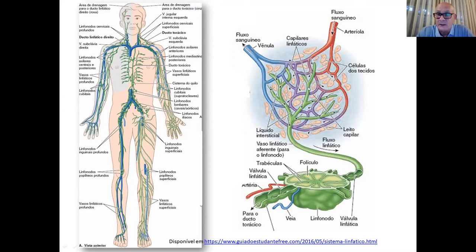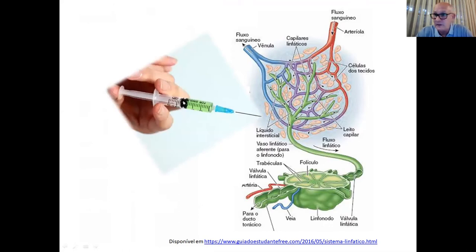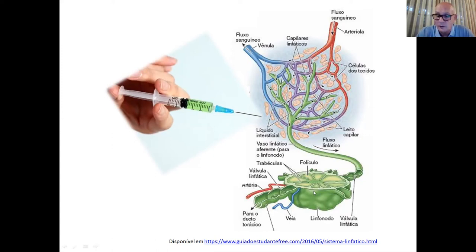O importante é lembrar que todos esses vasos linfáticos passam por um linfonodo, por um gânglio linfático. Quando injetamos um antígeno vacinal, inevitavelmente ele cai no plasma, é recolhido por um vaso linfático e levado até o linfonodo. É sempre nos órgãos linfóides secundários que nasce a resposta imune adaptativa — a resposta imune inata ocorre no local da agressão.